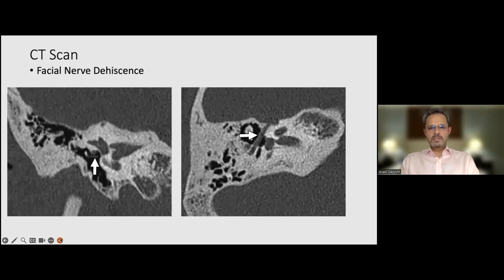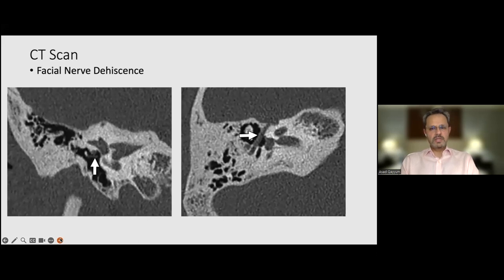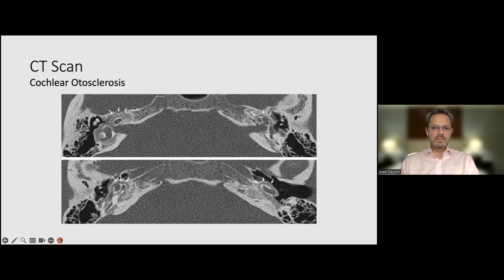In this scan the facial nerve is dehiscent. On the left side it is almost covering the footplate and possibly even bifurcating. In such cases, preoperatively I know the chances of completing surgery successfully are not great. It will not stop me from proceeding, but it will allow me to tell the patient that I may not be able to complete this surgery successfully.